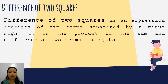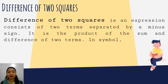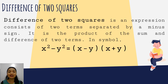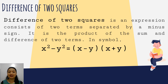The difference of two squares is an expression consisting of two terms separated by a minus sign. It is the product of the sum and difference of two terms. In symbols, x squared minus y squared is equivalent to the quantity x minus y times the quantity x plus y. The two factors can be interchanged since commutative property is allowed in multiplication.